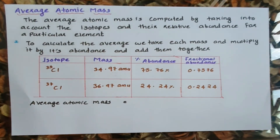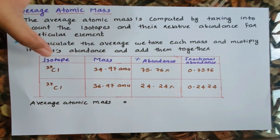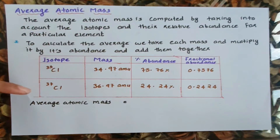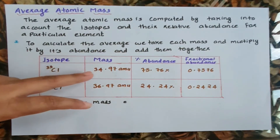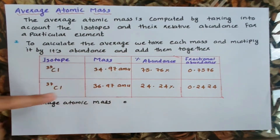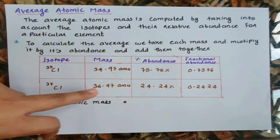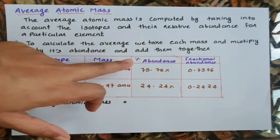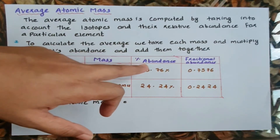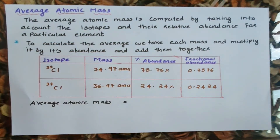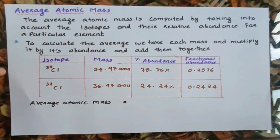We will calculate the average atomic mass using two isotopes of chlorine: Chlorine-35 and Chlorine-37. Chlorine-35 has an atomic mass of 34.97 amu, and Chlorine-37 has an atomic mass of 36.97 amu. We use the relative abundance fraction for each.